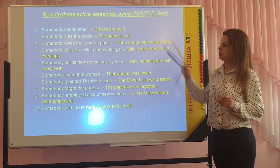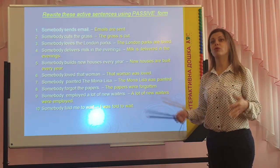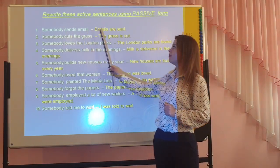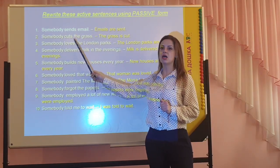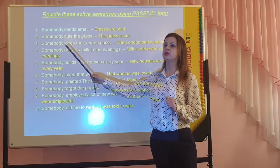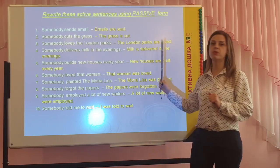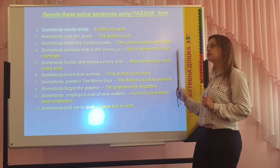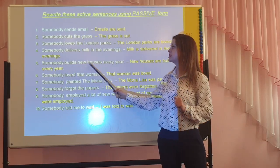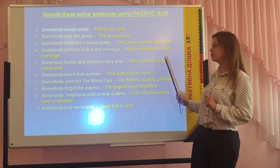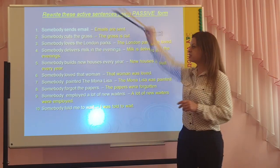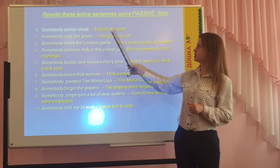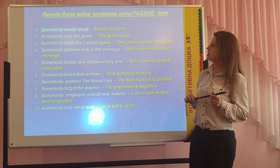Now let's look at some practice sentences. Somebody sends emails → Emails are sent. Somebody cuts the grass → The grass is cut. Somebody loves the lantern sparks → The lantern sparks are loved. Somebody delivers milk in the evening → Milk is delivered in the evening. Somebody builds new houses every year → New houses are built every year. In this part we use the present simple passive form, using 'is' or 'are' and the third form of the verb.